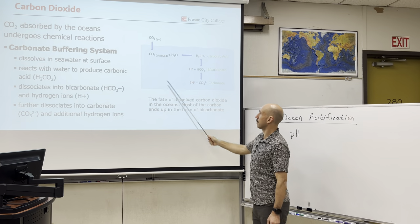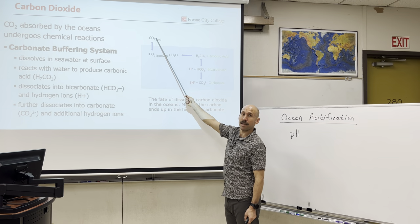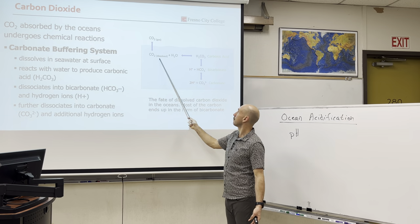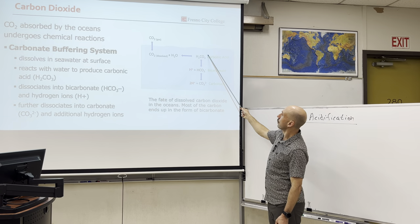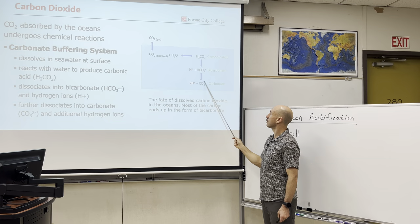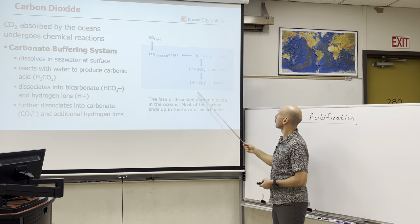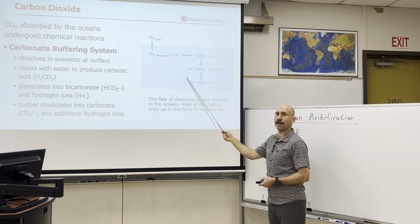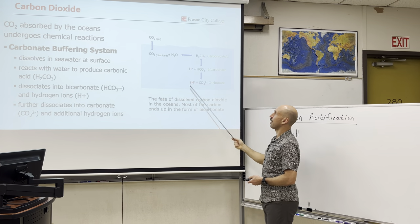The carbonate buffering system is the chemical change at work. CO2, a gas in the atmosphere, is absorbed into the ocean as a dissolved gas. It interacts with water to create carbonic acid. Chemical reactions continue to create bicarbonate and carbonate, which is useful for different marine organisms to build their shells. The byproducts are hydrogen ions — free hydrogen ions in the ocean. So a lot of CO2 in the ocean means a lot of hydrogen ions.